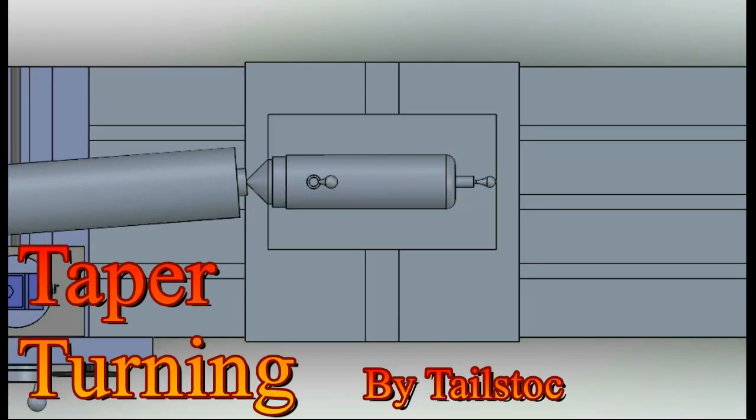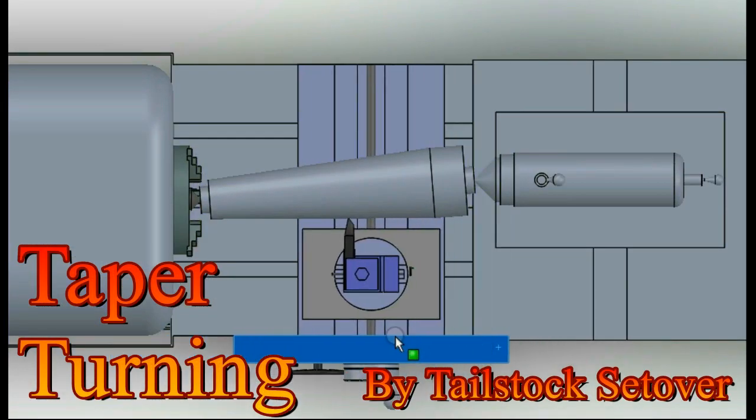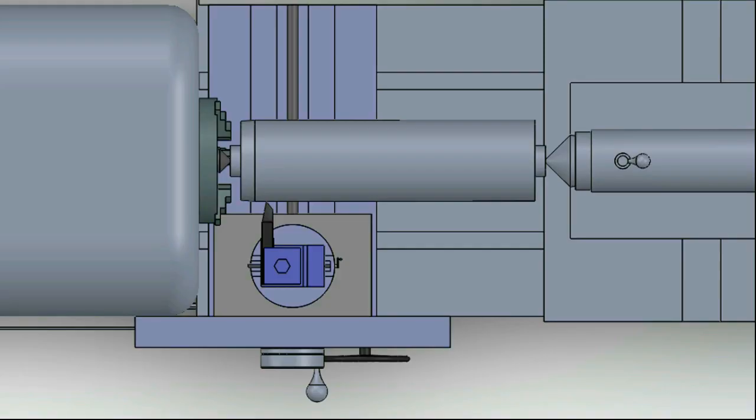In this video we're going to talk about taper turning in lathe by tailstock setover method. Taper turning is possible when the axis of rotation of the workpiece and feed direction are at an angle.